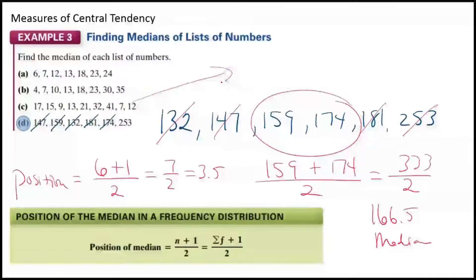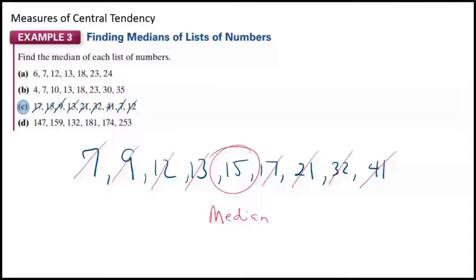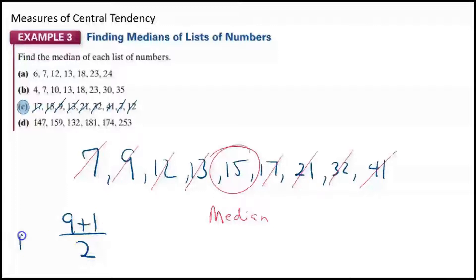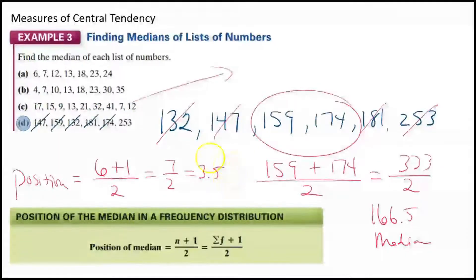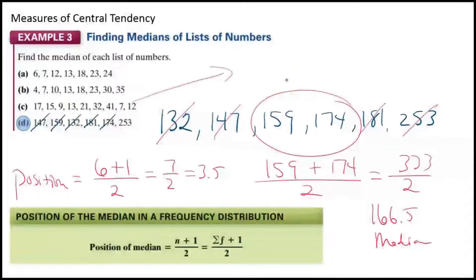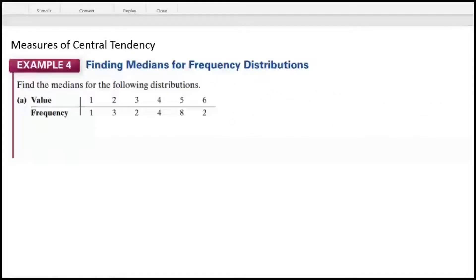Going back to example C with nine values: 9 plus 1 divided by 2 equals 10 divided by 2, which is 5. That's the fifth position — a whole number, so it's just the value at position five, which is 15. Anytime you get a whole number for the position, you just count to that item. Anytime it's a decimal, you average those two positions.